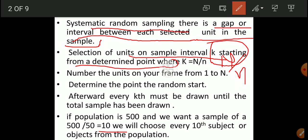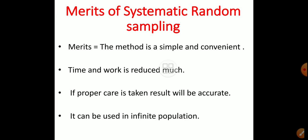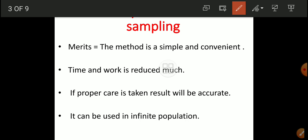So this is the procedure of selection in systematic random sampling. Once again, sampling is the procedure of selecting a sample from a population. There are two main types: random sampling and non-random sampling. Random sampling is divided into two types: systematic random sampling and stratified random sampling. We have been learning systematic random sampling. Now we will get an idea about its merits.